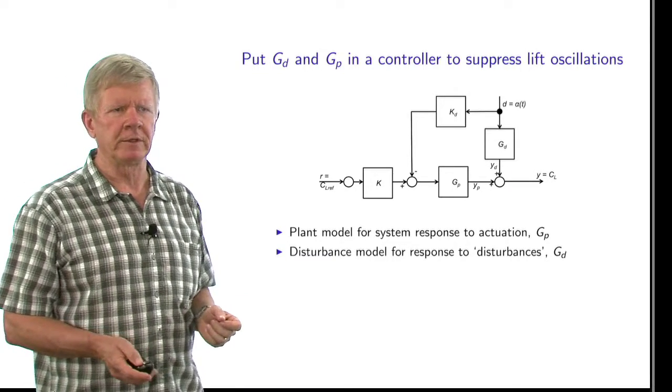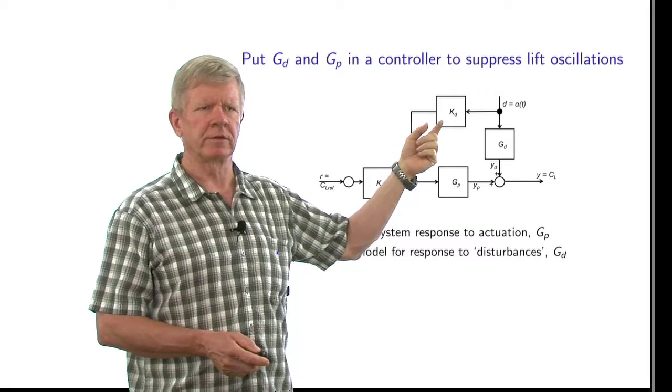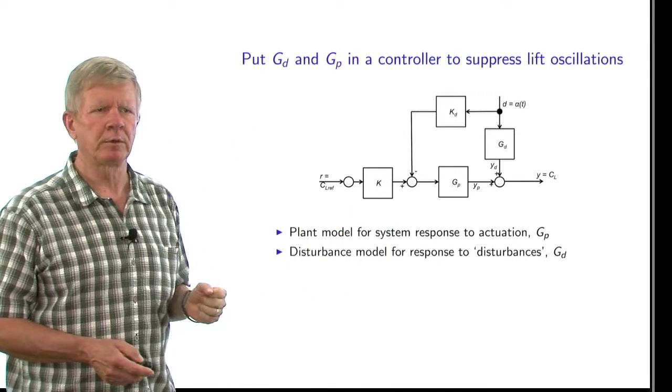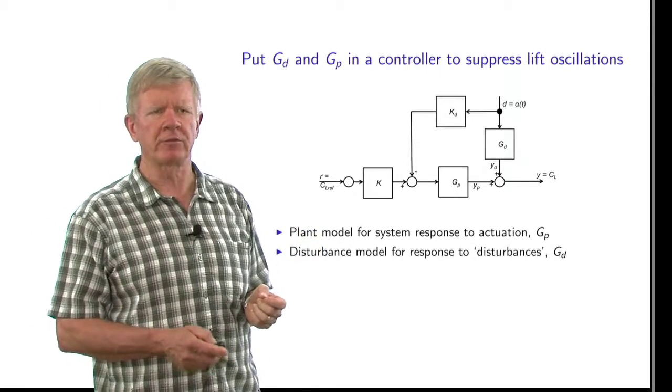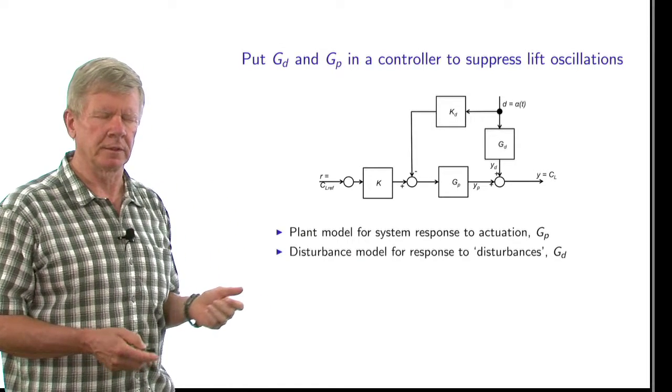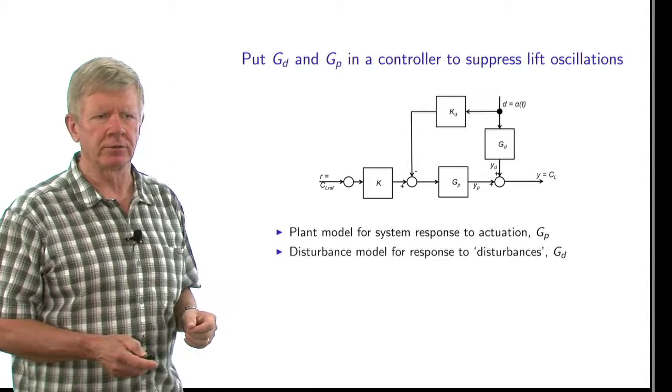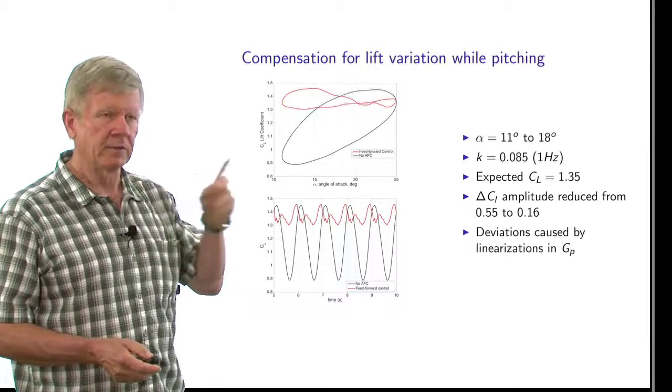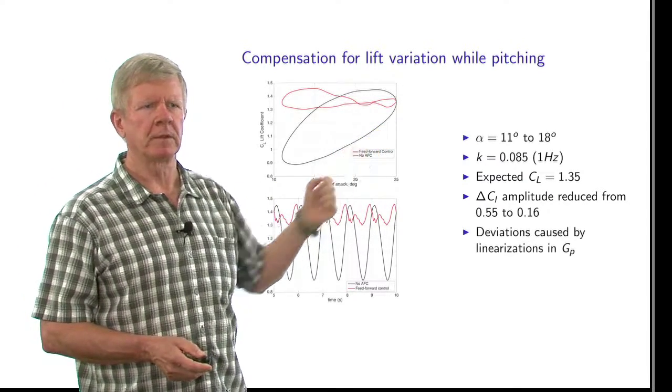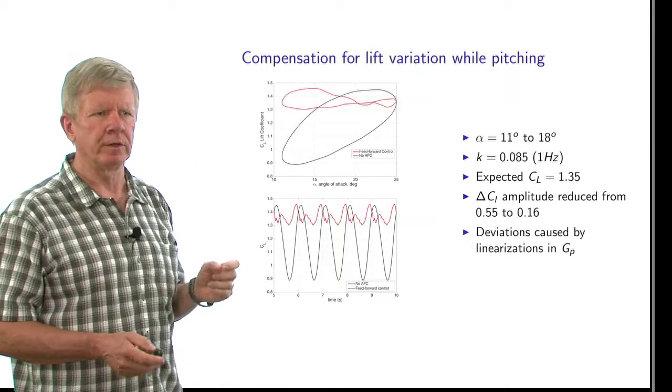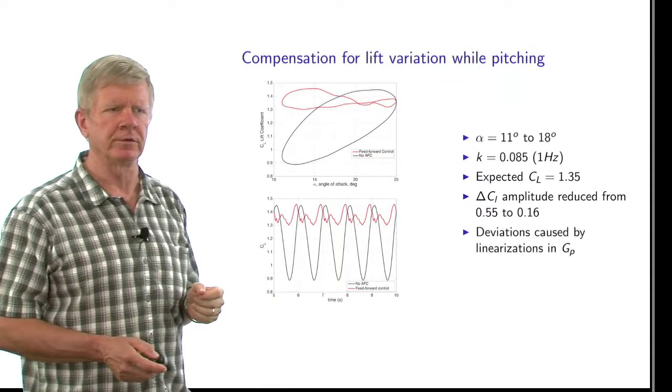So now we have our two models, G sub P and G sub D, and we combine them together in a controller that's only going to use a feed forward component, and that's this K block here. The feed forward component is made up of an inverted plant model multiplying the disturbance model, and it controls how the actuator will respond to the incoming disturbances in order to maintain a constant lift coefficient value. We plug all of this into Simulink to make a prediction of how this system will perform, and this is the result that we get. We have C L plotted against angle of attack. The black curve is the prediction for how the lift coefficient will behave when there is no active flow control. But when we turn our controller on, we're predicting that we will get this red curve response, which has greatly reduced the size of the hysteresis loop.